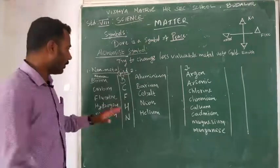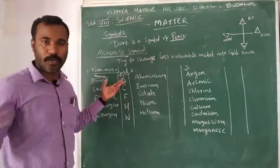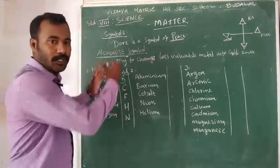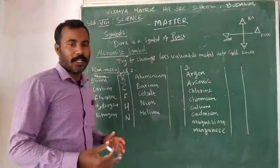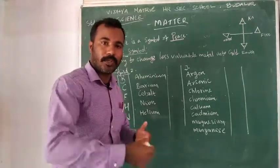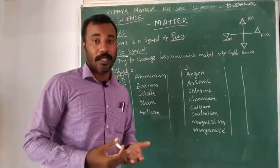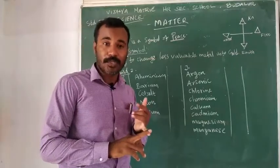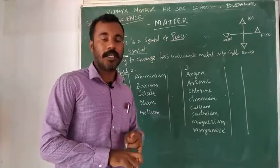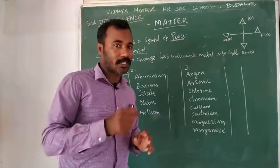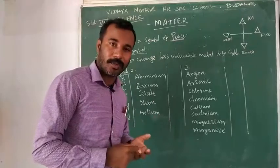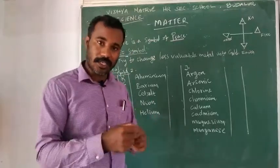So the first method: boron — B, carbon — C, F for fluorine, H for hydrogen, N for nitrogen. This is the method. Now, there are 118 elements in total. If we use only the first letter, two elements may have the same symbol.